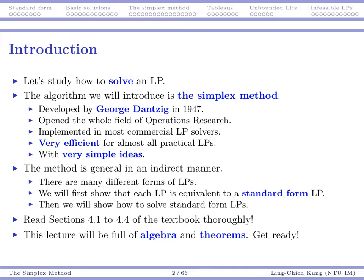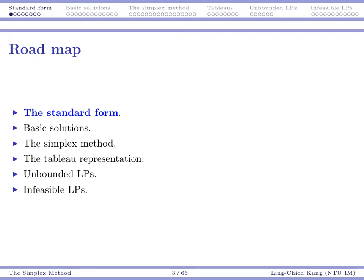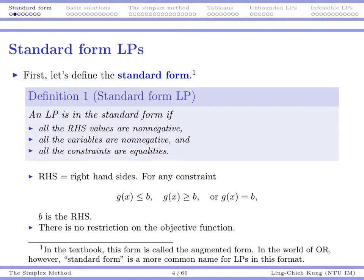For any other linear programs, we will also show how to convert them into standard form. You may want to read the textbook thoroughly — the materials are not really hard but you need to spend some time on them. This lecture will be full of algebra and theorems, so please get ready; it will be a little long because we have a lot of material. The first thing is to talk about the standard form. A linear program is in standard form if three conditions are satisfied: first, all right-hand-side values are non-negative.